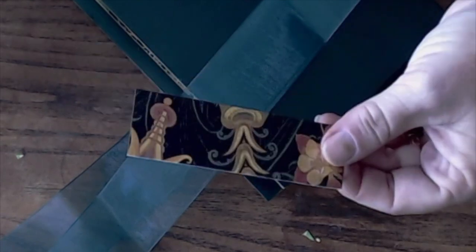Use your scrap patterned paper to cut a strip to hold the ribbon in place on the back of the cover. Ink the edges, add some adhesive, and glue it over the ribbon. Let dry.